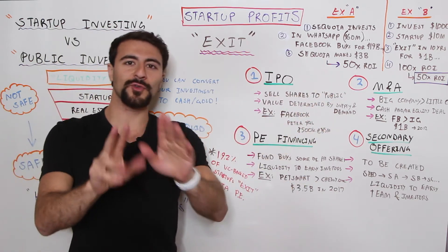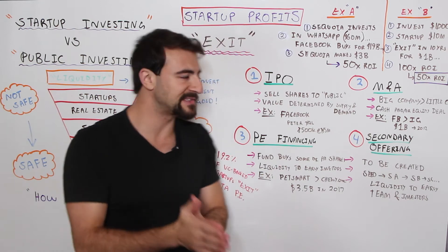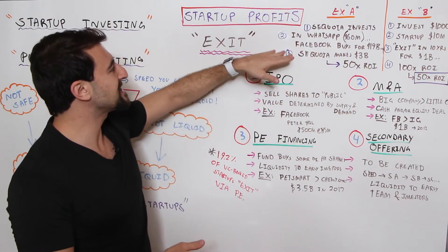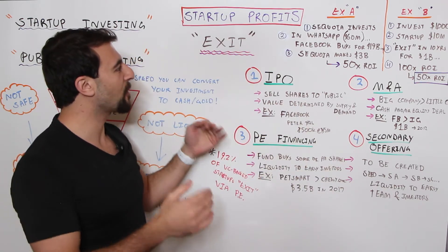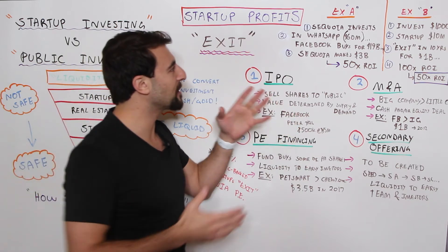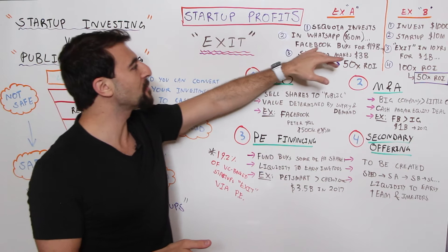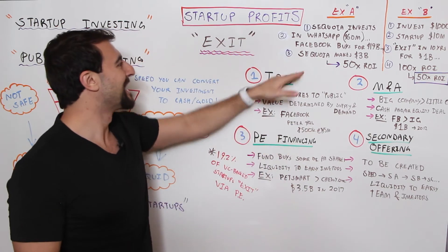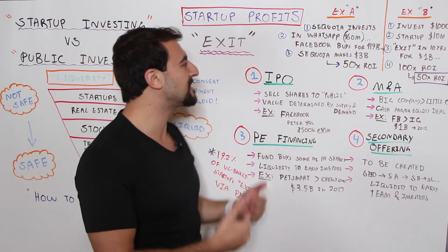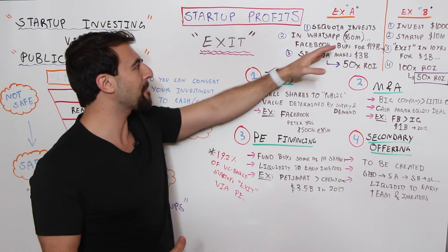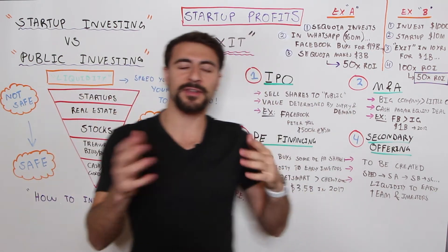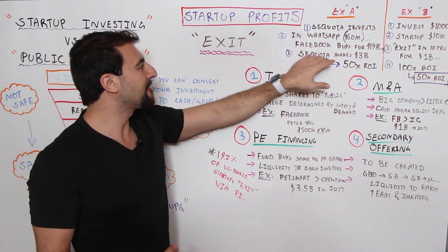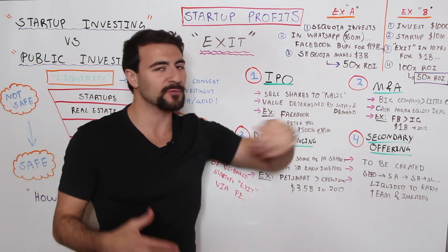Before going into each of the four ways, let me give two real-life examples of how this works. Example A: in 2009 or 2010, Sequoia Capital invested $60 million in WhatsApp, the popular messaging platform. A few years later, Facebook acquired this platform for $19 billion, and Sequoia made $3 billion on this deal — a 50 times return on investment. So Sequoia Capital's $60 million investment was very illiquid, and the liquidity event happened when Facebook acquired WhatsApp.